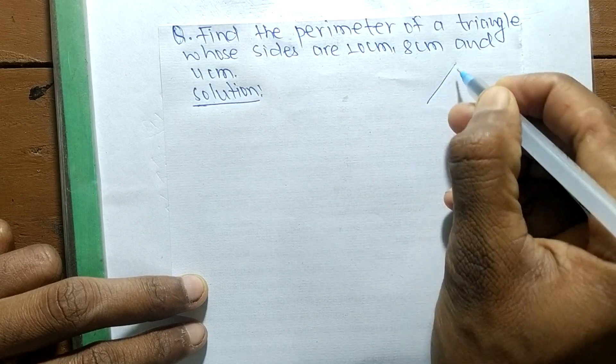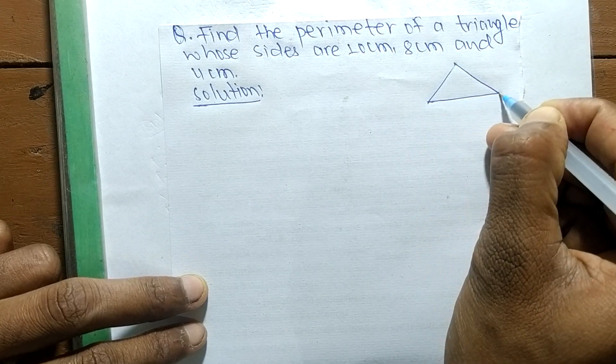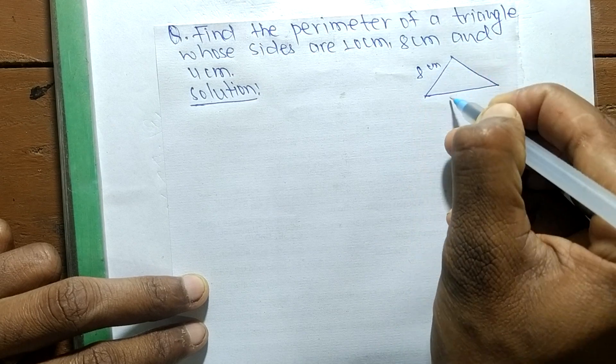Suppose we have given this triangle and its sides are 8 cm, 10 cm, and 4 cm.